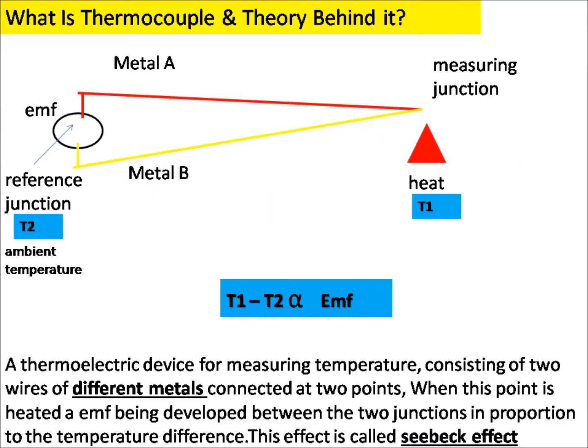A thermocouple is a thermoelectric device for measuring temperature, consisting of two wires of different metals connected at two points. A voltage is developed between the two junctions in proportion to the temperature difference. This phenomenon is called the Seebeck effect.